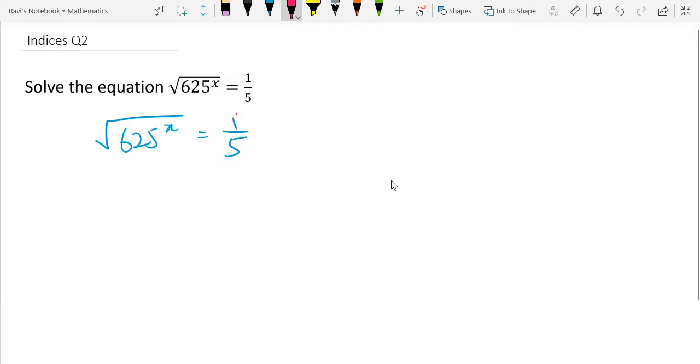Okay, so since we know that on the right-hand side is 1 over 5, that can be simplified to say it is 5 to the power of minus 1.